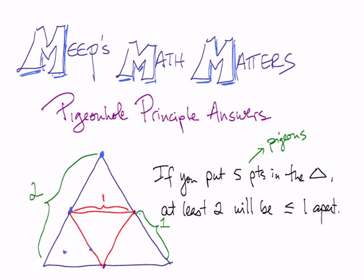The farthest, for equilateral triangles, the farthest part you can get are the corners, which here are distance one apart. So that is an interesting use of the pigeonhole principle.